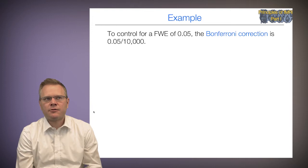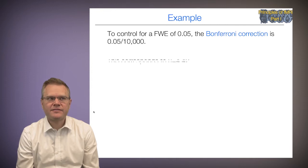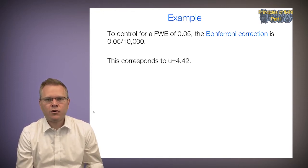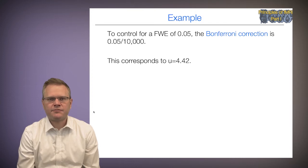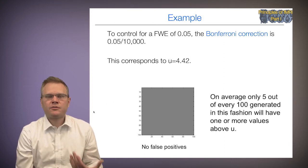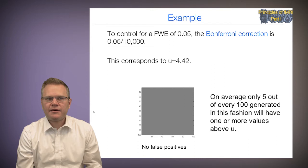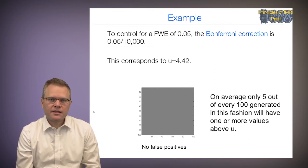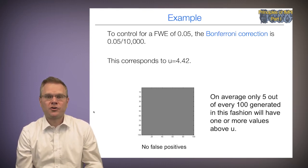To control the family-wise error rate at 0.05 with Bonferroni, we divide by 10,000, giving a threshold of u = 4.42 instead of 1.645. With this much more stringent threshold, we get no false positives at all. If we repeated this simulation 100 times, on average only 5 out of 100 generated datasets would have one or more values above u — so the probability of any false positive among 10,000 tests is only 5%.